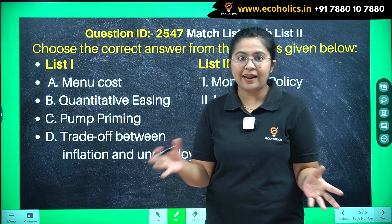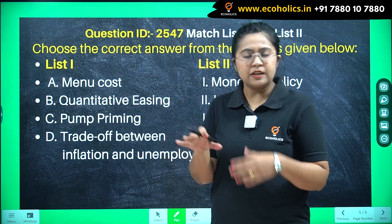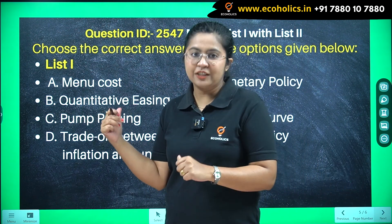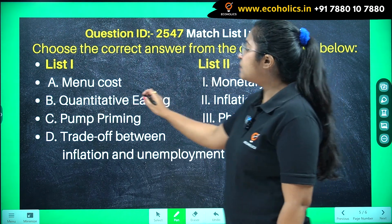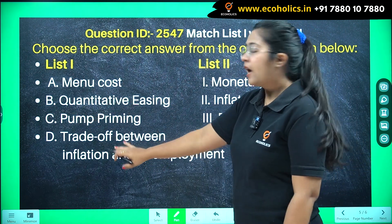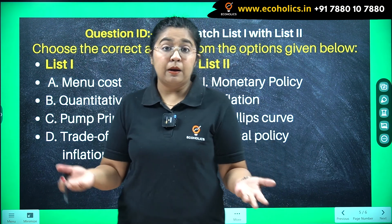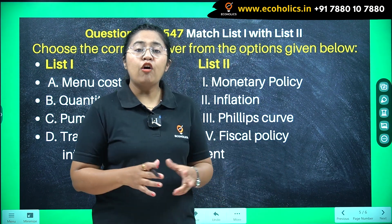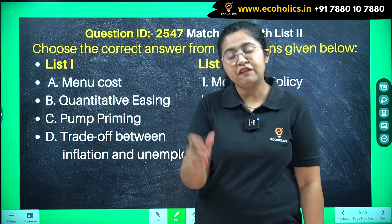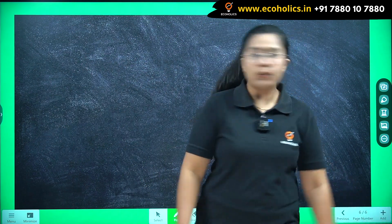I have not taken the various options that were present in the question paper, but instead just the question itself, so that we can understand in full length the various concepts related to it. The four concepts are: menu cost, quantitative easing, pump priming, and trade-off between inflation and unemployment. Let's go one by one and understand each concept in brief. Let's start with menu cost.